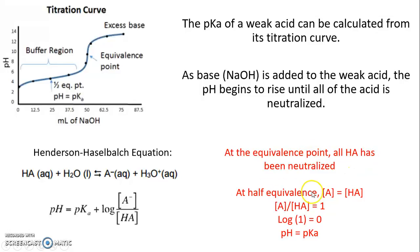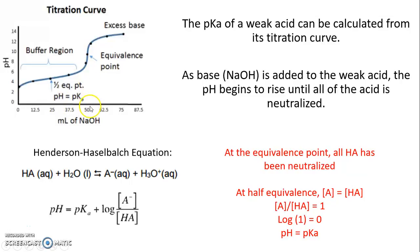At the half-equivalence point, your conjugate base equals your acid, A⁻/HA = 1, log of 1 is zero, so pH = pKa. If you have a titration curve, find the equivalence point, go back to halfway — say from 50 mL to 25 mL — and read the pH at that point. That pH is your pKa.